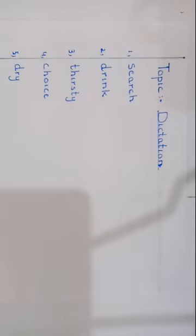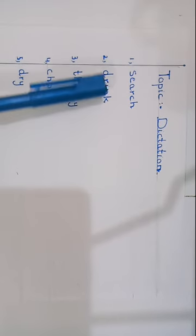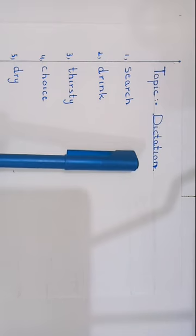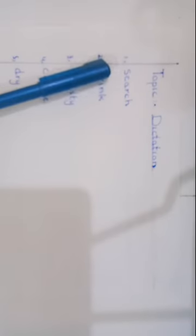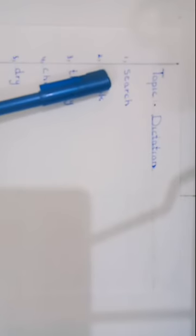Now, these are dictation words. You will have to learn these dictation words, and after learning, you will have to write them in your notebook of English literature. After writing the topic 'Dictation,' our first word is 'search' — S-E-A-R-C-H, search.